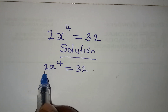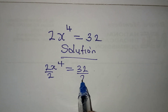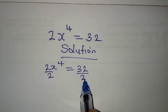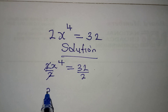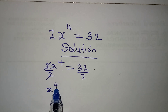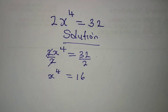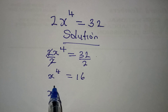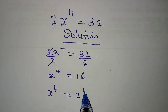The first step is to divide this by 2 and divide this by 2, so that this will cancel, and x to the power of 4 will be equal to 16. This is the same thing as x to the power of 4 equal to 2 to the power of 4.